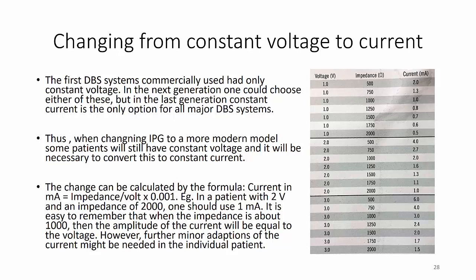When changing an older IPG to a more modern model, some patients will still have constant voltage settings and it will be necessary to convert to constant current. The change can be calculated by the formula: current in milliamps equals impedance divided by volts times 0.001. For example, in a patient with 2 volts and an impedance of 2000 ohms, one should use 1 milliamp. It is easy to remember that when impedance is about 1000 ohms, the amplitude of current will equal the voltage. Minor adaptations of the current might still be needed in the individual patient.